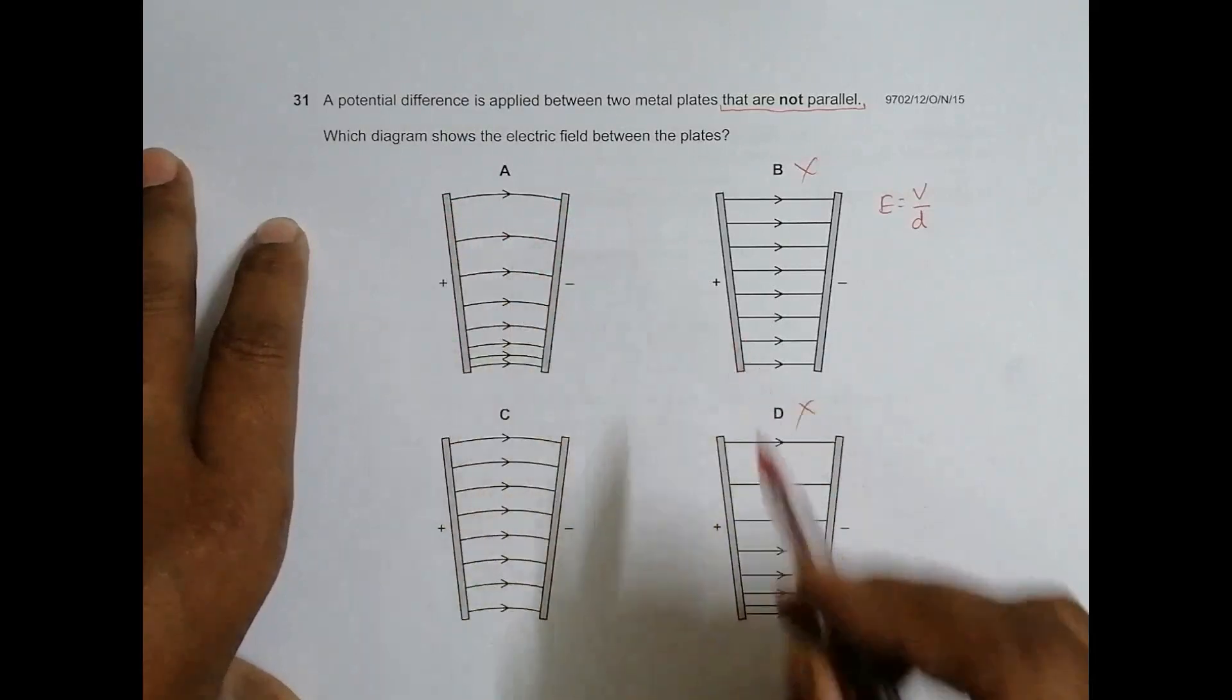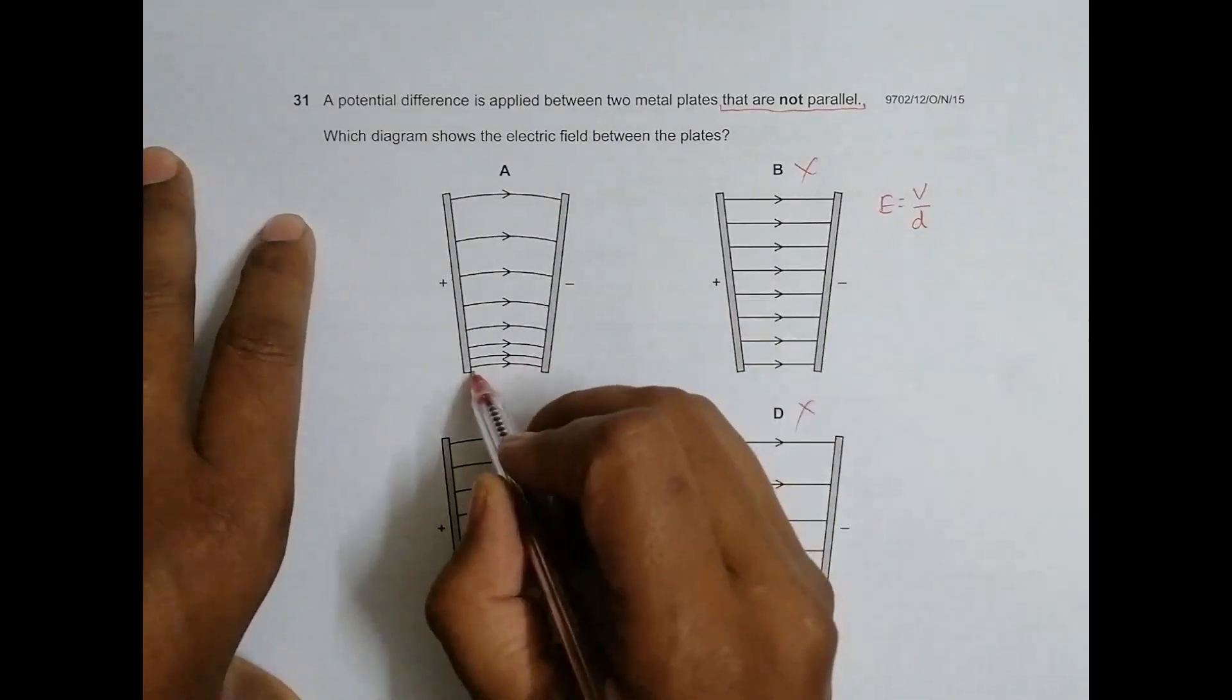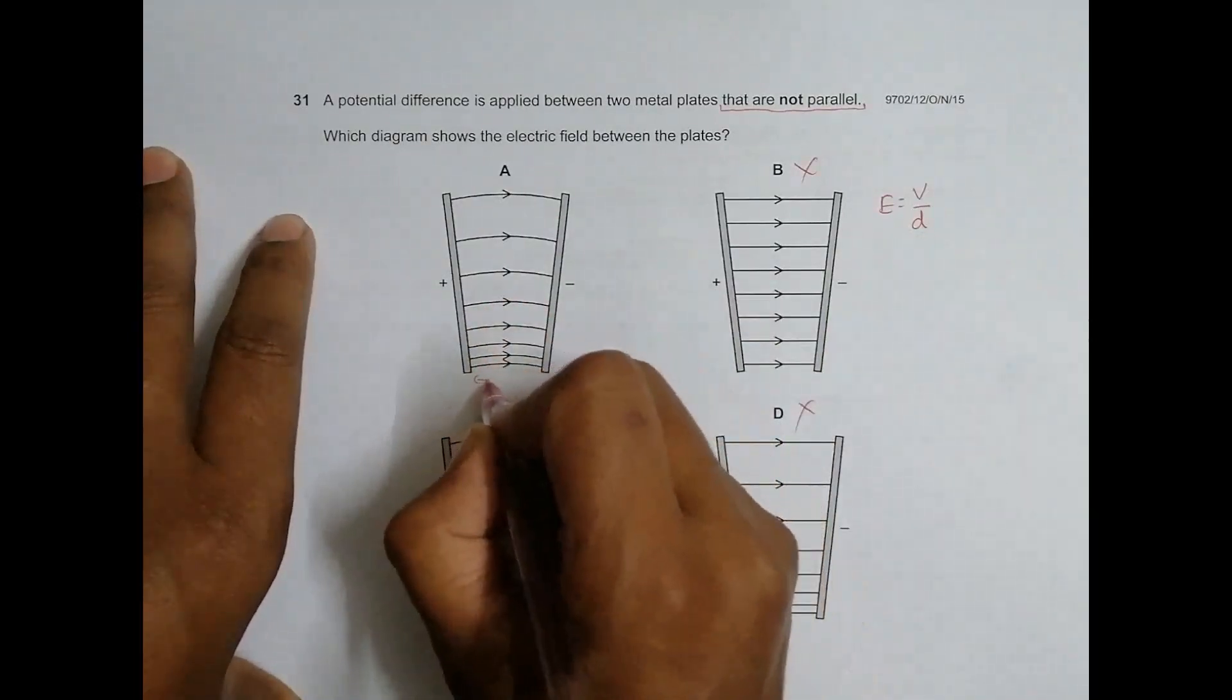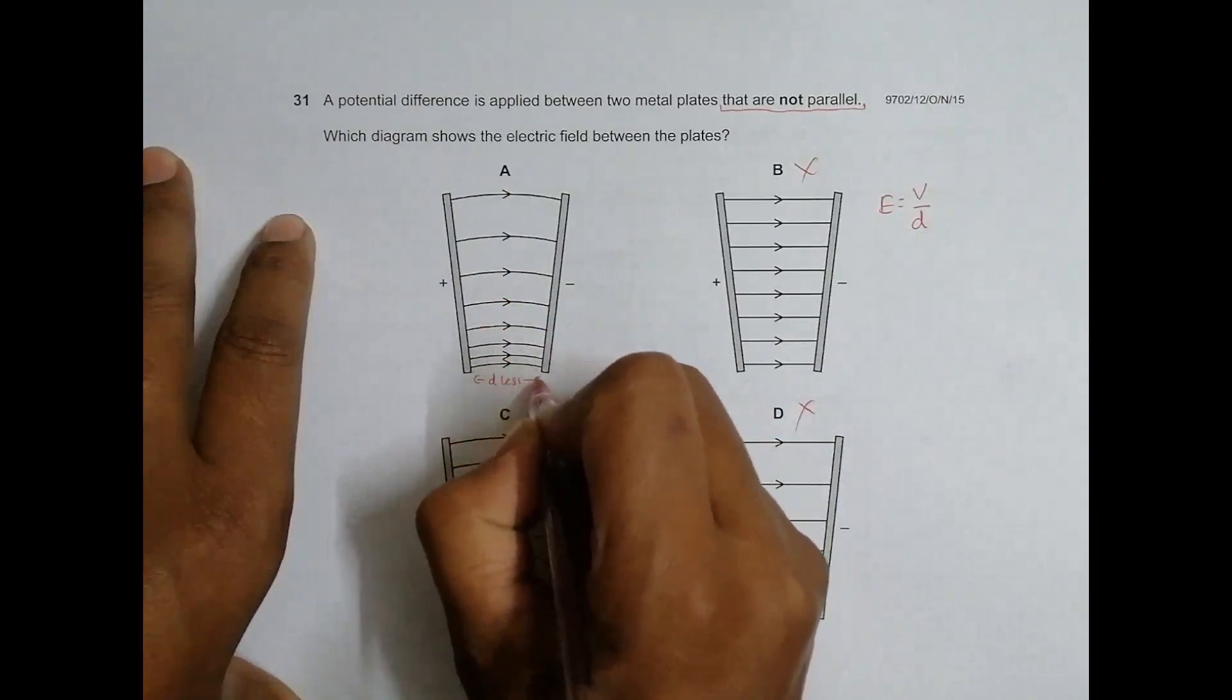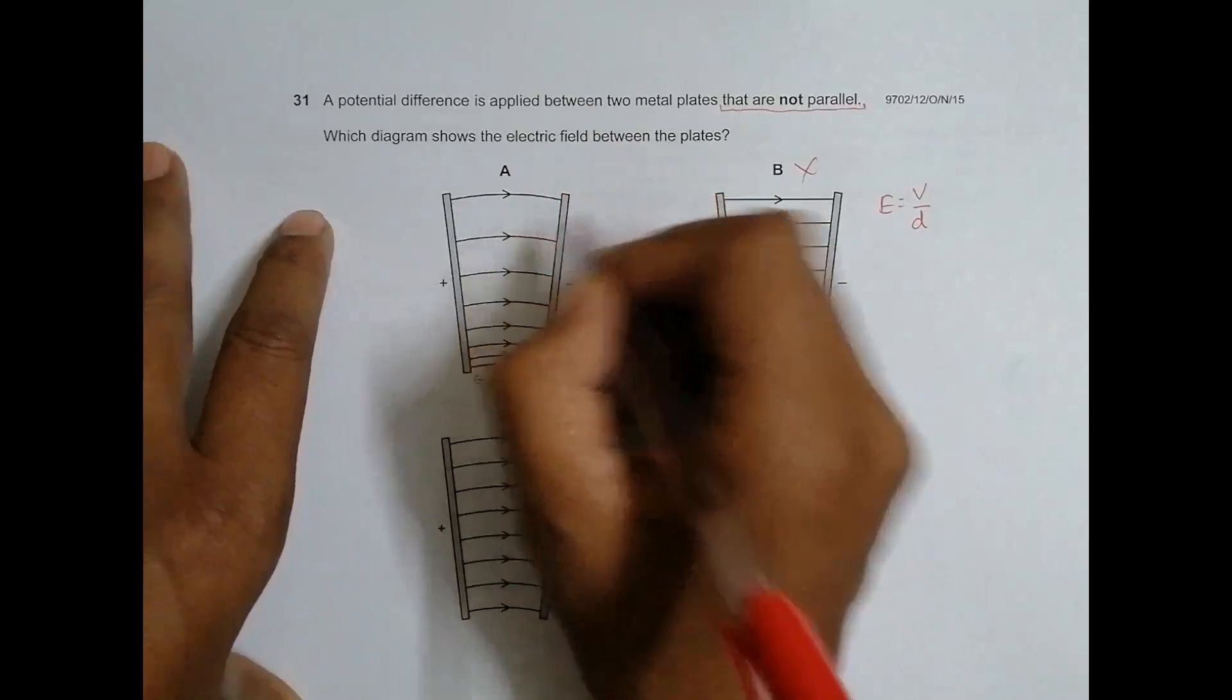Here it's the same case, but the distance D varies. Here D is less, and here D is more. So that means D is more in some places, V is constant, and D varies.